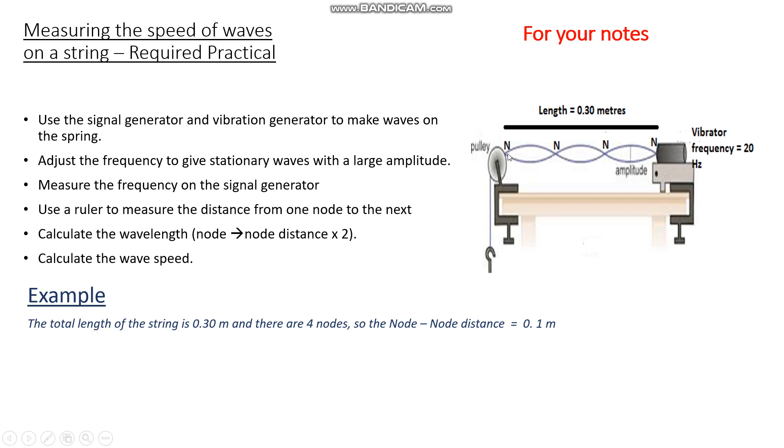Now can you see that there are one, two, three, four nodes on that string? So if the total length is 0.3 meters, then the distance between each pair of nodes, the three pairs there, is 0.1 meters. 0.1 plus 0.1 plus 0.1 gives you 0.3. So the node to node distance is 0.1 meters.